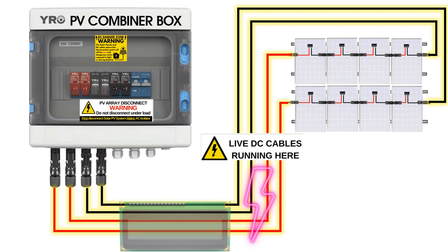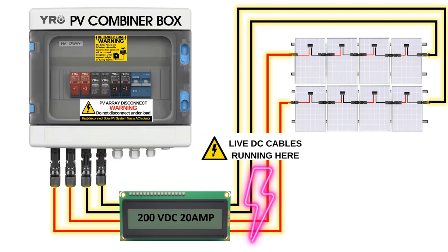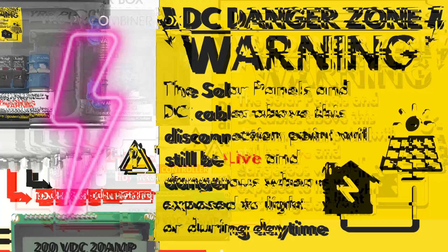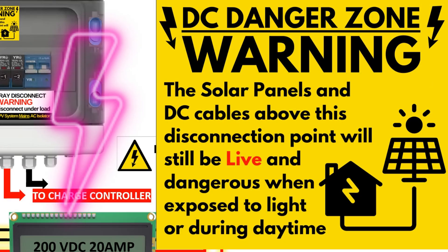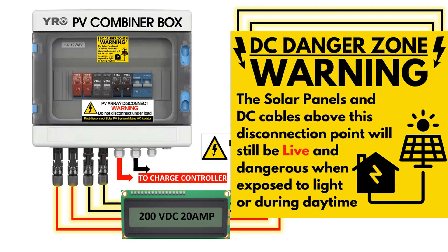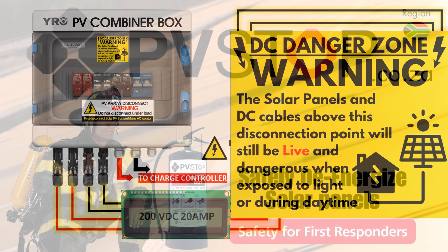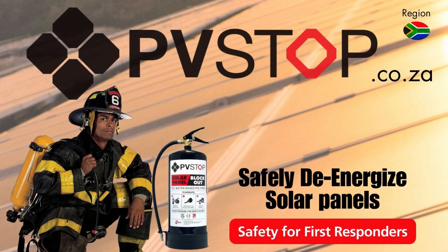Your 200-volt, 20-amp system at the PV combiner box will go to your charge controller. This is a critical DC zone warning: the solar panels and DC cables above this connection point will be live and dangerous when exposed to light or daylight. Even under overcast or artificial light they will still produce power. By disconnecting your PV combiner box, there are still many wires that remain live — you need to take note of that.